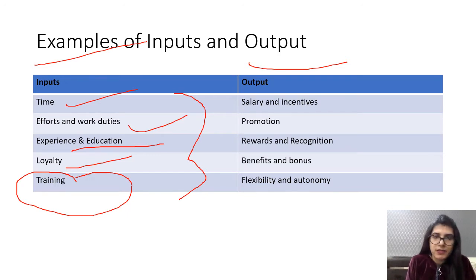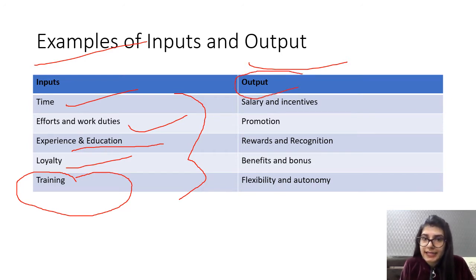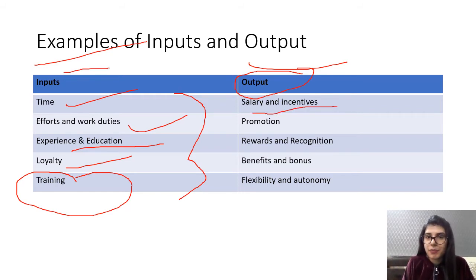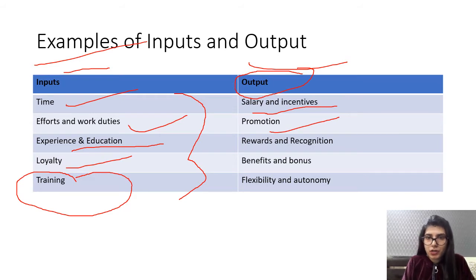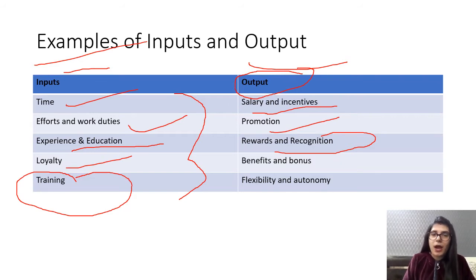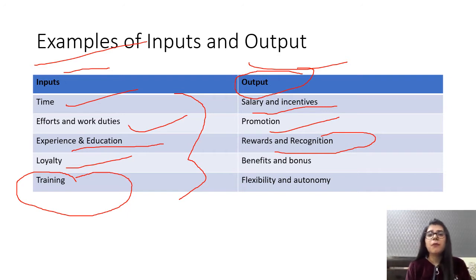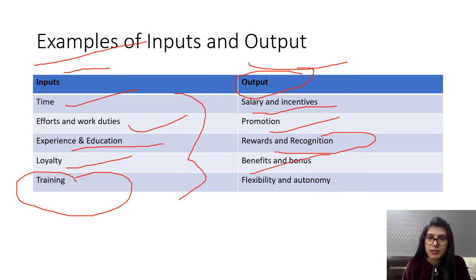These inputs help us in achieving the goals of the organization. What we expect in return — the outputs — are salary and incentives, promotion if we've done good work and served a long term, rewards and recognition, benefits and bonus, flexibility and autonomy. Just like when you were a child and came first, second, or third in class, you expected to be awarded at the annual function or morning assembly.